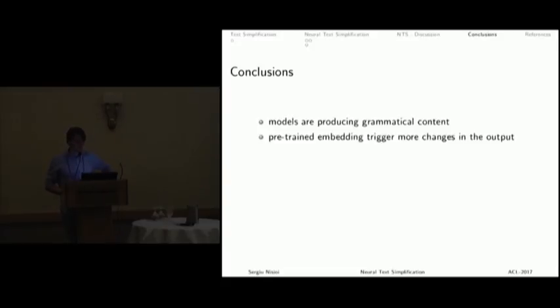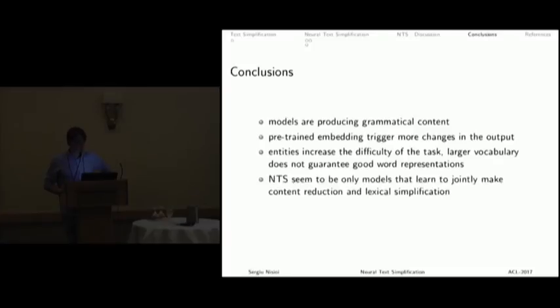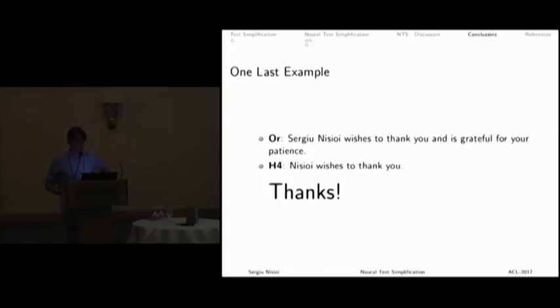Conclusion. Models are producing grammatical content, which we already knew in a way. Pre-trained embeddings trigger more changes in the output, so they can improve the overall results. Entities increase the difficulty of the task, especially with the data. And NTS models seem to be the only one that learned to jointly make content reduction and lexical simplification. The full code and everything is here. Thanks.